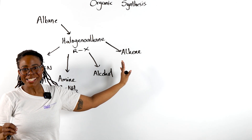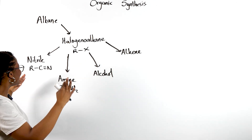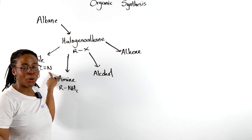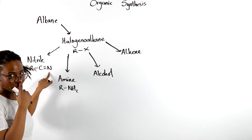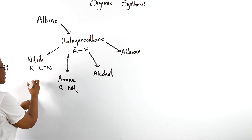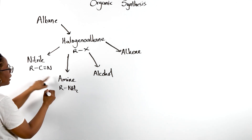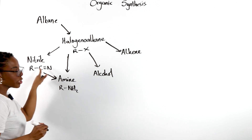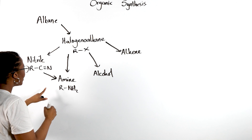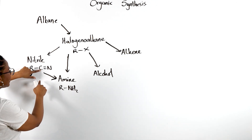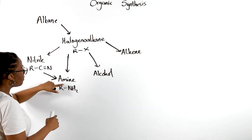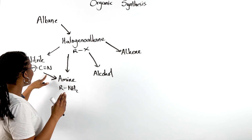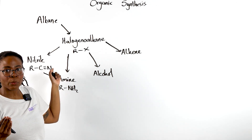Let's see what these can turn into. Starting with a nitrile — once we've got that nitrogen — the simplest option is we can just turn our nitrile into an amine by reduction, so adding hydrogen. But specifically, notice we've added an extra carbon, so our amine is going to have one more carbon in it than the original halogenoalkane we started with.